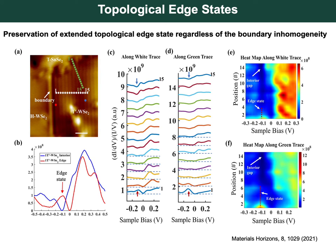We wanted to know the spatial extension of the topological edge state, particularly whether it is perturbed by local inhomogeneity at the heterostructure boundary. The STM image shows a partially converted domain with two types of boundaries: a smooth boundary between H and T-prime WSe2, where lattice constants along the boundary direction are identical, and a rough boundary between SnSe2 and T-prime WSe2 due to misfit dislocations. STS line profiles along both boundaries show the topological edge state extending almost the same distance — about 2 nanometers — into the interior of the WSe2, providing strong evidence that this topological edge state is robust regardless of boundary inhomogeneity.